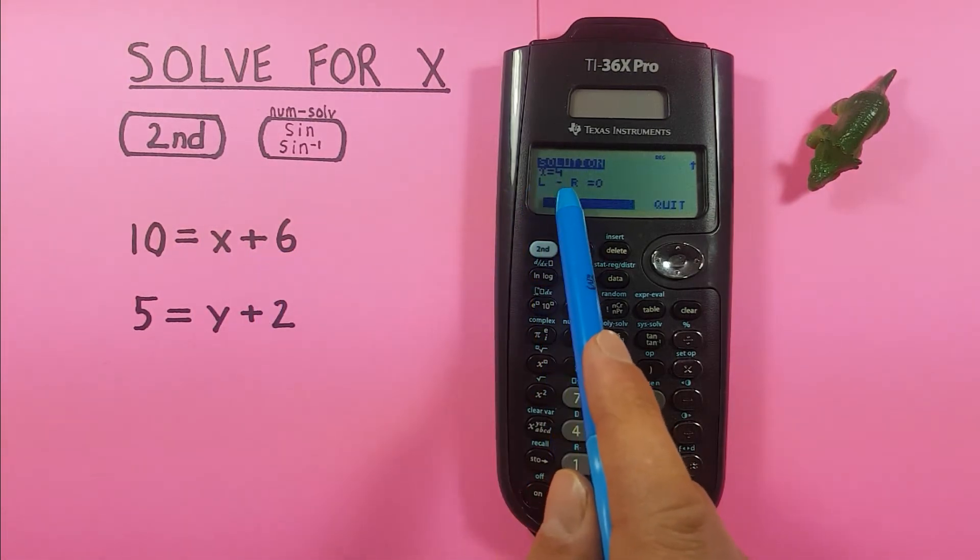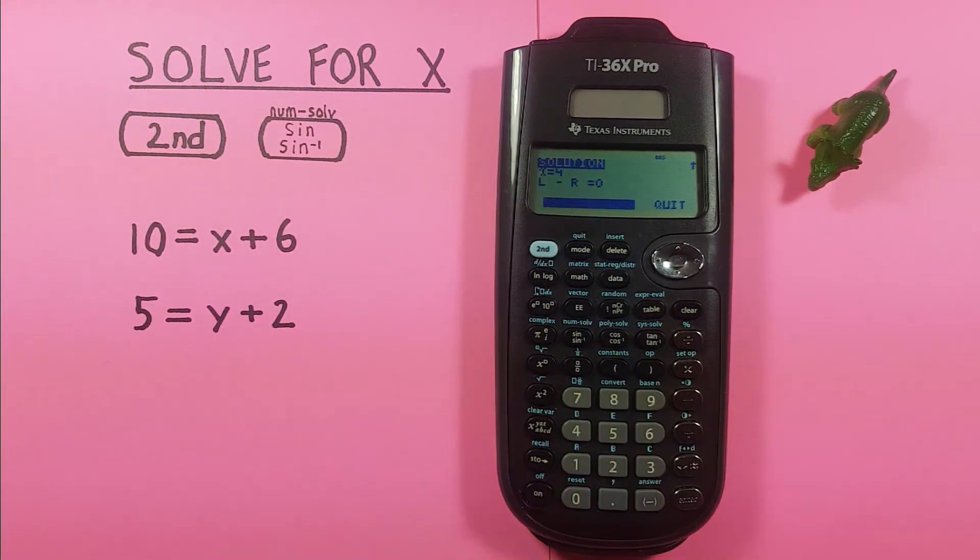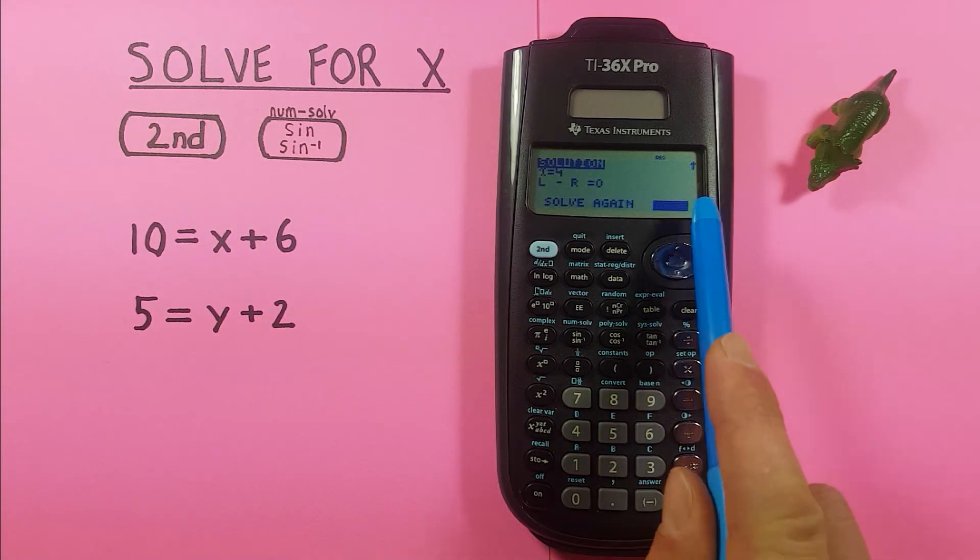And then the L minus R is equal to 0. So that tells us that both sides are equal and it's a good solve. When we're done with this we can go over to quit and hit enter.